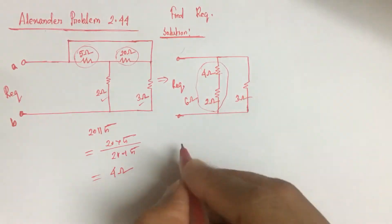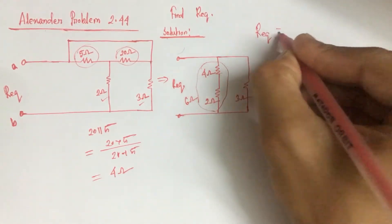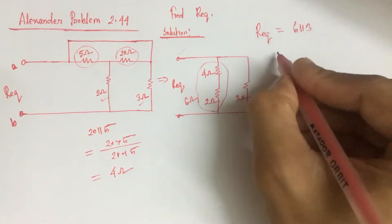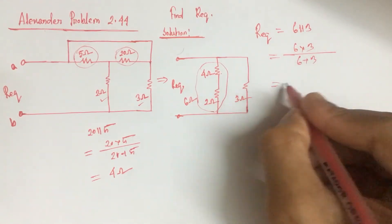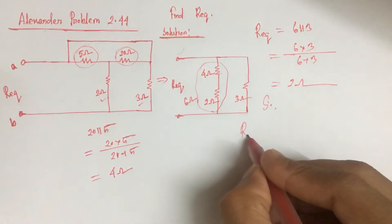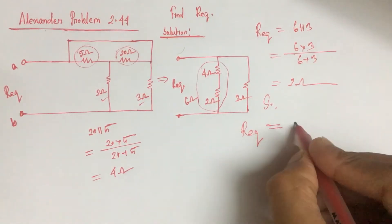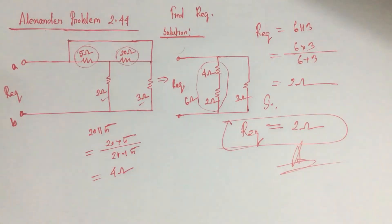Now the 6 ohm and 3 ohm is in parallel, so our equivalent is 6 parallel 3, that is 2 ohm. So our equivalent is equal to 2 ohm. This is the answer, thank you.